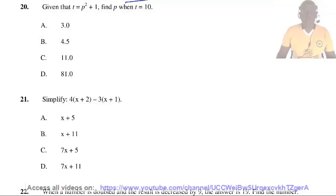Question 20. Given that T = P² + 1, find P when T = 10. We have T = P² + 1, and T is 10. So 10 = P² + 1. P² is going to equal 10 minus 1, so 9 = P². So P is the square root of 9, which is 3. So the answer is A.